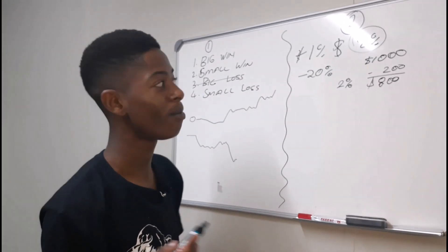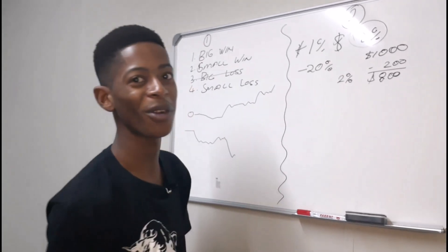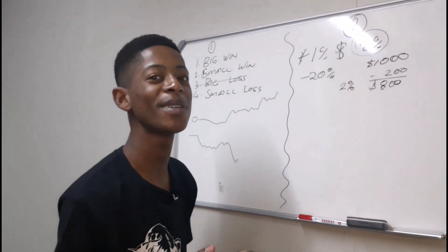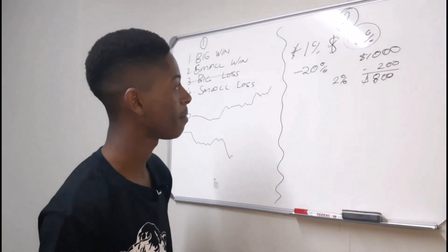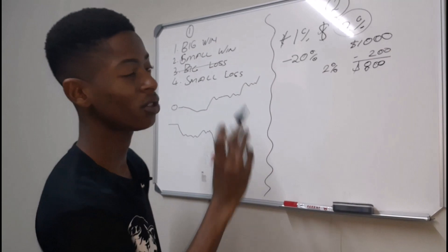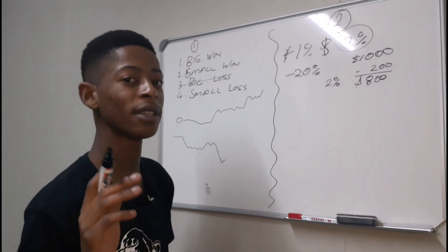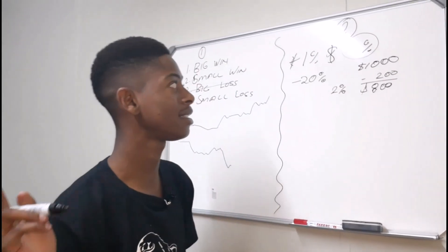You'll never get to blow your account using this method. Because even if you're on $10, you're still risking 2%, which is like 20 cents or something like that. But this is what you have to do, you have to just keep on sticking to the same risk. That is secret number two.